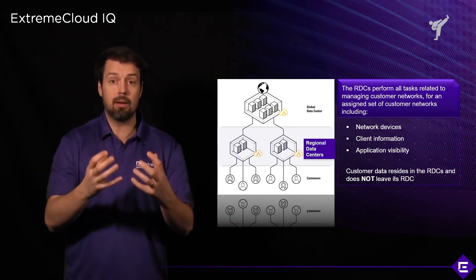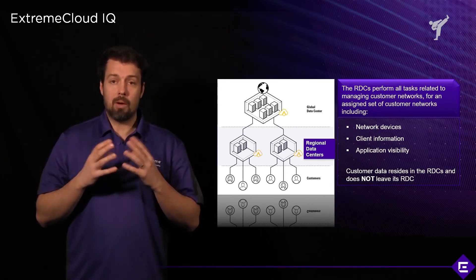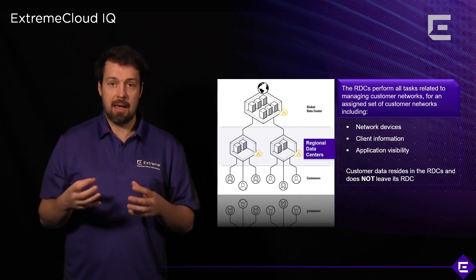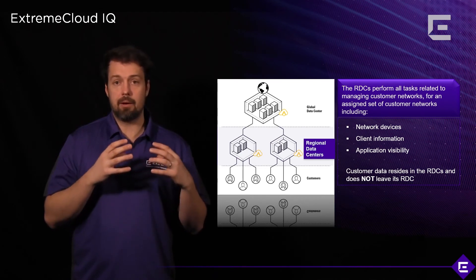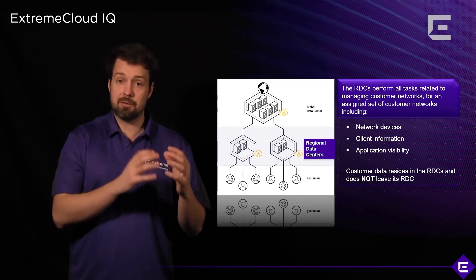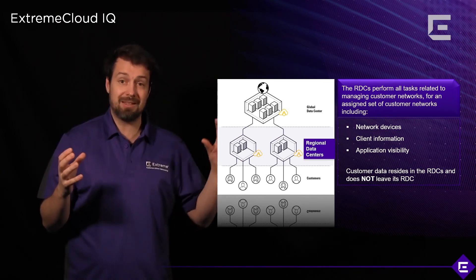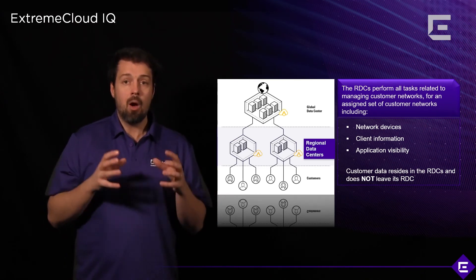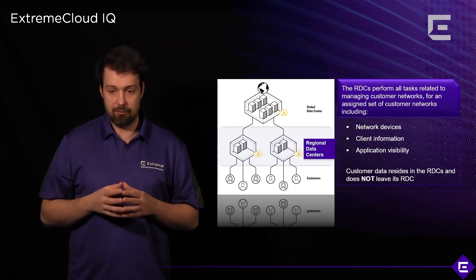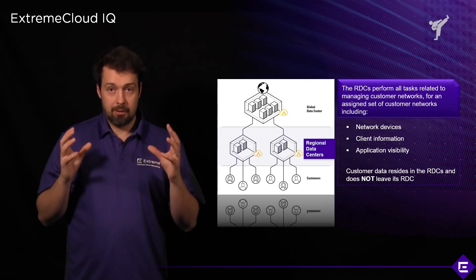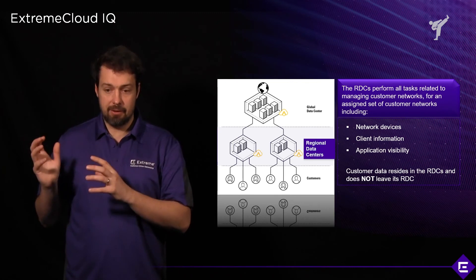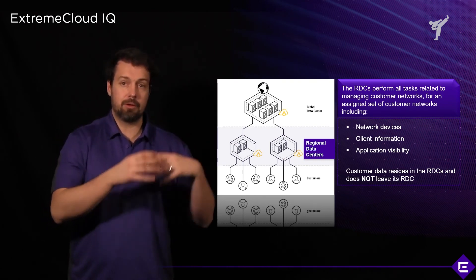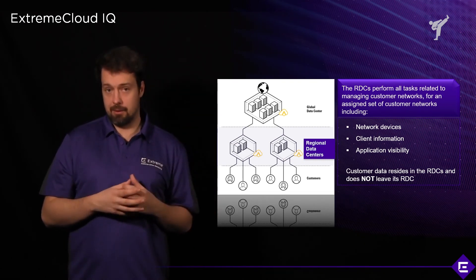All these data sources are gathered and collated within the platform. Client information is also gathered — clients connecting to the network, their sessions, and the applications they're using. This doesn't mean entire sessions are recorded, but which applications each user has been using, for how long, and how much data they've consumed is all collected and stored. And the customer data resides wherever the RDC is and does not leave that RDC — so if you're in Germany, the data doesn't leave Germany.